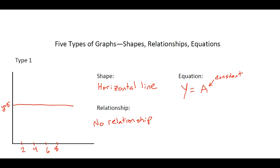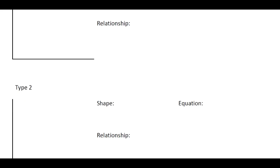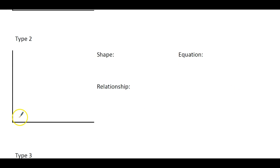On the next type of graph, we have type two. This one is very similar to the one before. You'll just draw a straight line starting at the corner and then going up to the right. And the shape for this one is now a line. Notice we didn't call it a horizontal line or a vertical line. We just call it a line. The relationship here is very simple to remember. It's just a linear relationship. The equation is your typical equation you would use for a line on a graph, and that's y equals mx plus b.